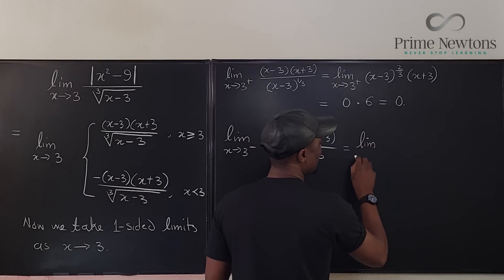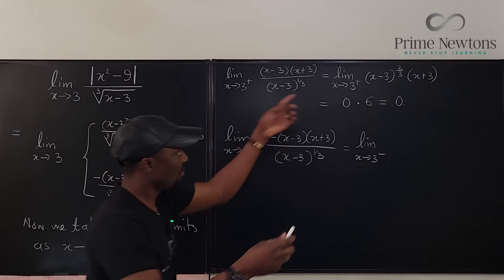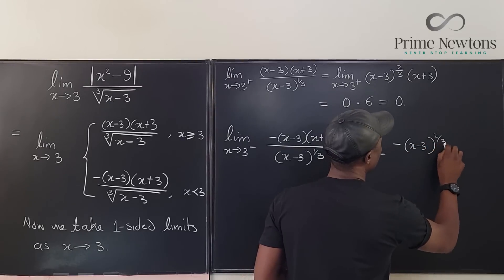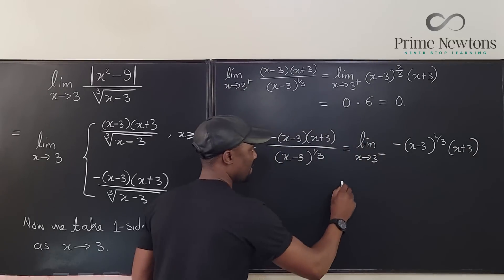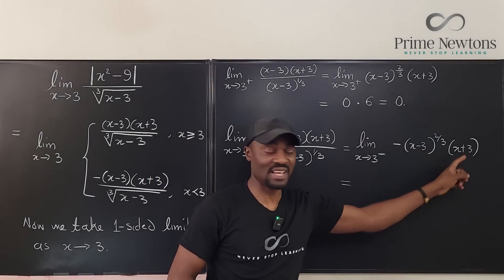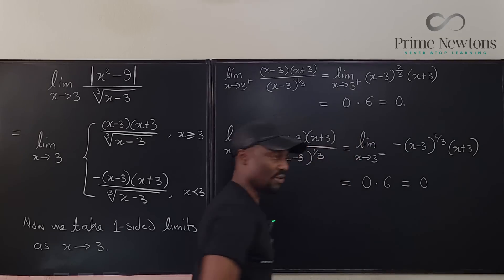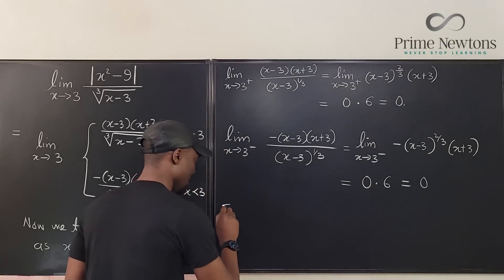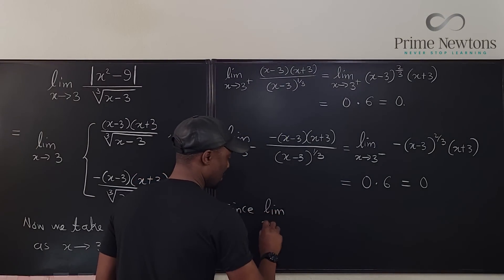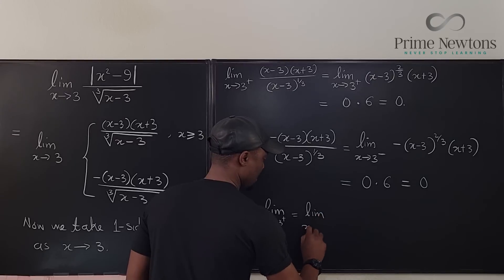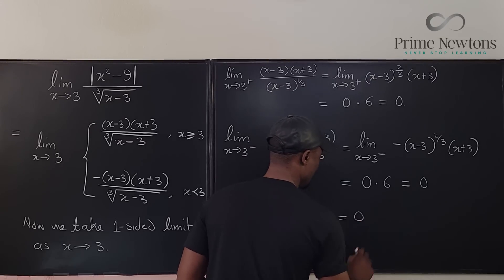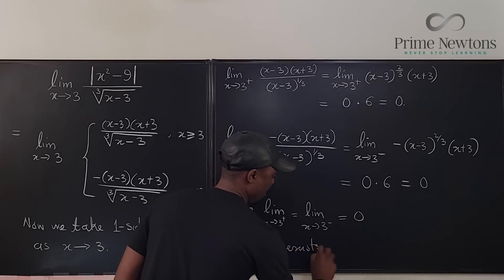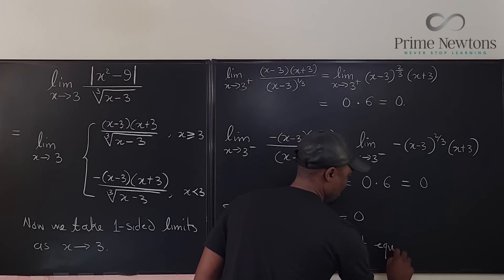The limit as x approaches 3 from the left is the negative version: -(x-3)^(2/3) times (x+3). Plugging in 3 again gives -(0)^(2/3) times 6, which is 0. So the limit from the right equals the limit from the left, both equal to 0. The limit exists and equals 0.